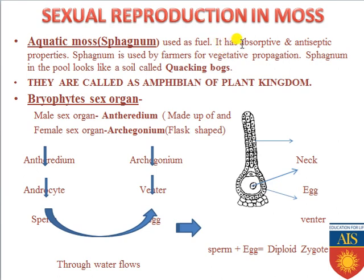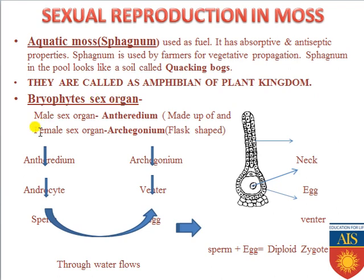Sphagnum is used by farmers for vegetative propagation, and Sphagnum growing in a pool makes the surface look like soil — this is known as a quaking bog. Most importantly, bryophytes are called the amphibians of the plant kingdom because they can survive in both terrestrial and aquatic habitats.